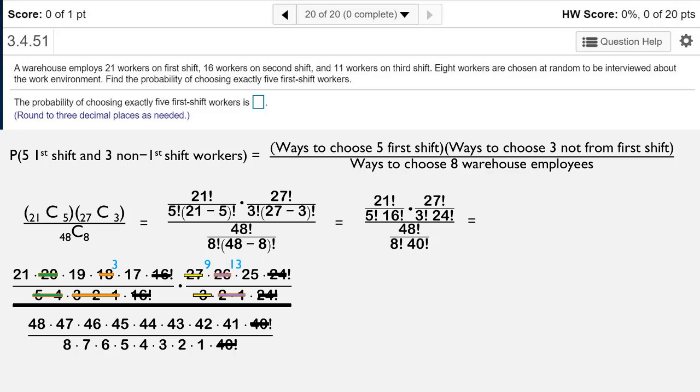In the denominator we have the 7 and the 6 make 42. 1, 2, 3, and 8 make 48 so those reduce. Then the 5 reduces with the 45 to give us 9, and the 4 reduces with the 44 to leave us with 11.